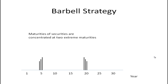The second strategy is known as a barbell strategy. In this case, you have maturities at the extreme ends of the maturity spectrum — here at five years and 10 years. We call it a barbell strategy because if you drew a line through there, it would look like a barbell with the weights on the sides.